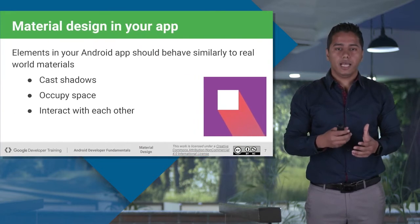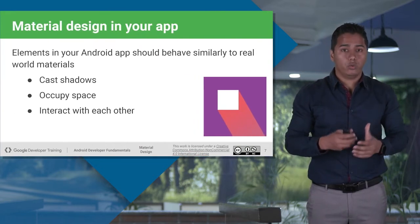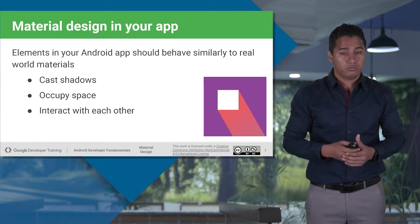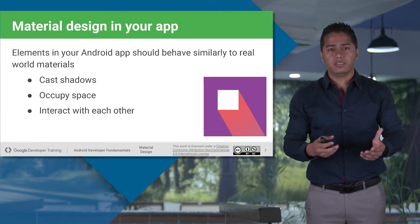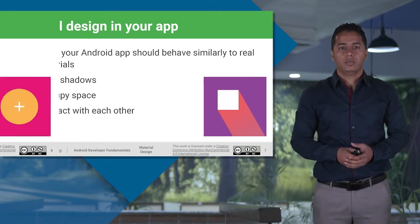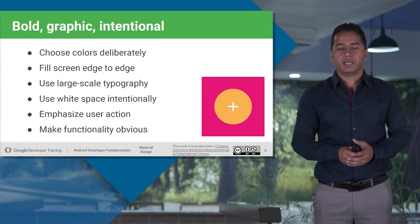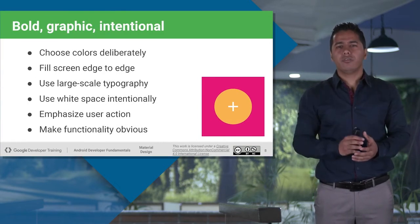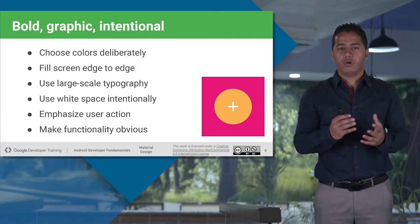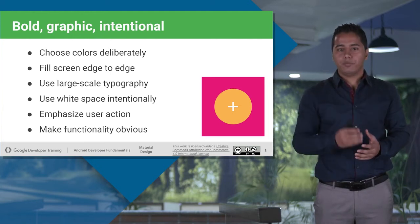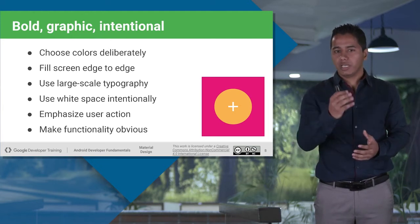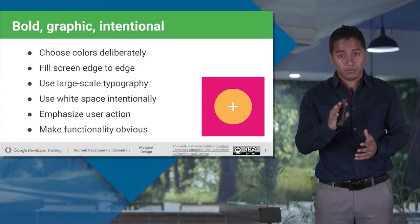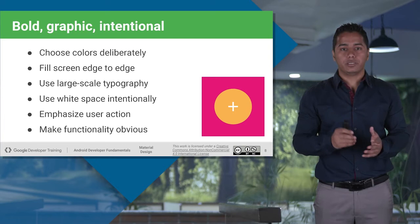So if we are designing our app for the real world, our elements and views should cast shadows, occupy space, and interact with each other. There are many guidelines for material design, and as you develop your app, you will discover more of them. But for now, let's look at some of the basic ones. All of these rules will make sure your UI is simple, easy to navigate, and liberate.